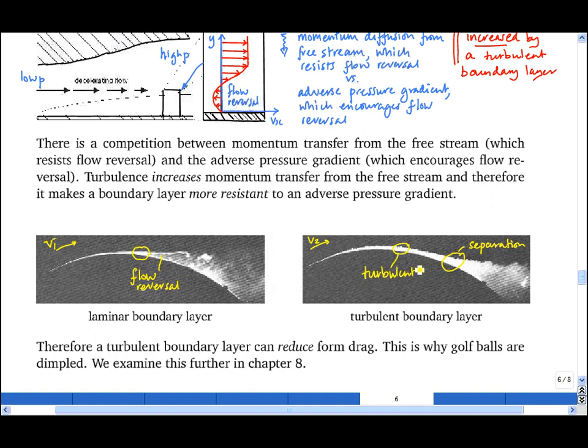And this turbulence is having a very strong effect on the boundary layer in that region, because the extra momentum transfer caused by the turbulence in the boundary layer is sufficient to withstand the adverse pressure gradient and avoid flow reversal in that region.